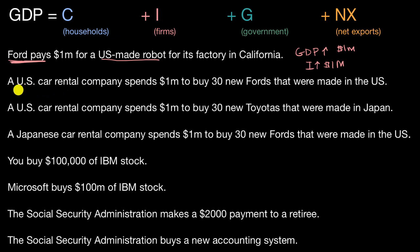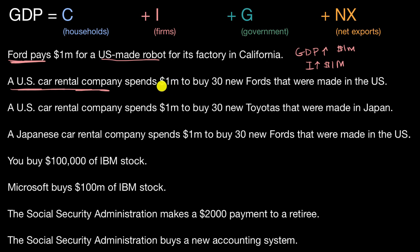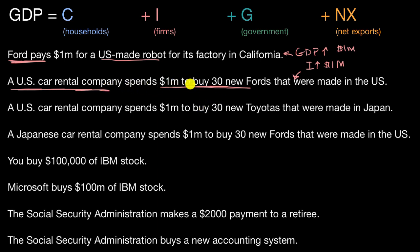Now let's look at the next scenario: a US car rental company spends $1 million to buy 30 new Fords that were made in the US. This is a very similar scenario — a US car rental company is investing in physical capital by buying those 30 new Fords, which it can rent out to create future benefit. So once again, GDP would go up by $1 million because investment went up by $1 million.